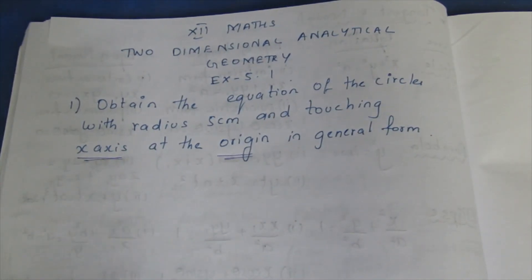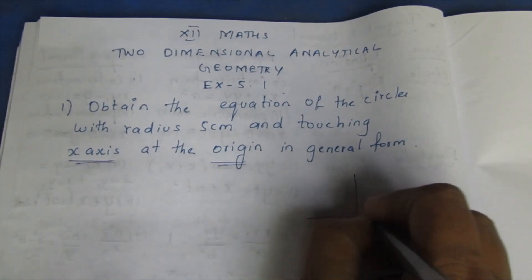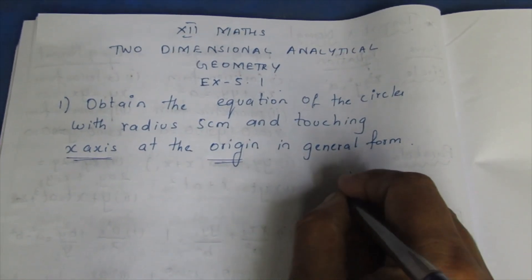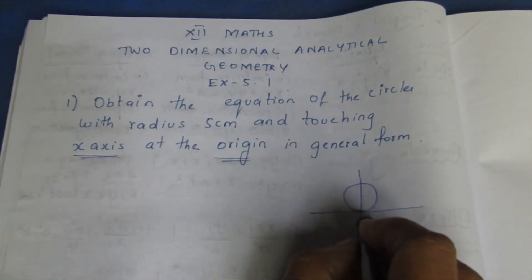Origin is touch. Here is x-axis. If the circle is touch, y-axis is a circle. X-axis is a touch origin. Here is a circle. Here is a circle.